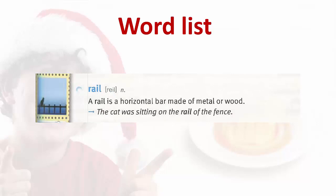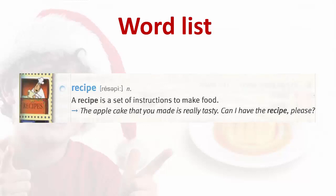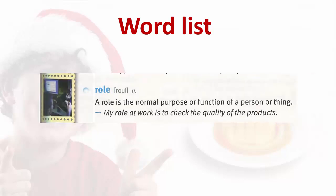Rail. A rail is a horizontal bar made of metal or wood. The cat was sitting on the rail of the fence. Recipe. A recipe is a set of instructions to make food. The apple cake that you made is really tasty. Can I have the recipe, please?